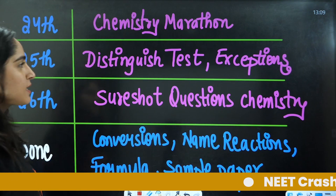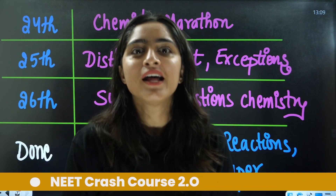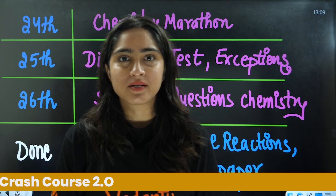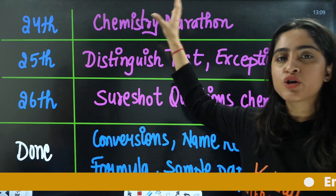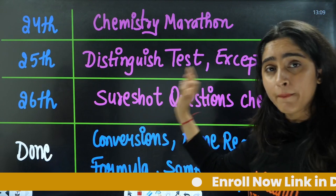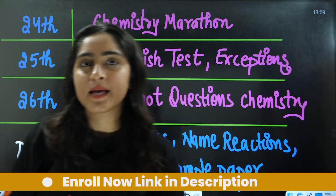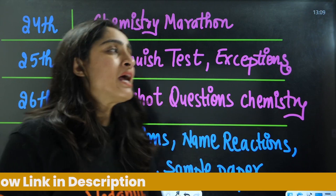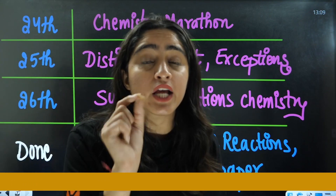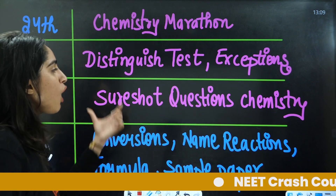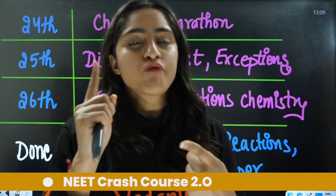Here is the surprise and the plan for CBSE as well as NEET aspirants. On 24th February we complete the chemistry marathon. On 25th we complete distinguished tests and inorganic exceptions in one go. On 26th, especially for CBSE students, we will complete short questions from NCERT and previous year questions.